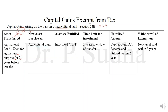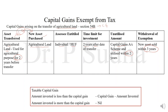Which assessee can claim this? Only individual and HUF. The time limit — the period within which the new asset must be purchased — is 2 years after the date of sale. If you are buying a land before the date of sale, it will not be considered; the asset should be purchased 2 years after the date of sale. Unutilized amount can be deposited in the capital gain account scheme and utilized within 2 years. If not, it will be treated as long-term capital gain. If the new asset is sold within 3 years, the exemption will be withdrawn. Taxable capital gain: if the amount is less, capital gain minus amount invested; if the amount is more, taxable gain will be nil.